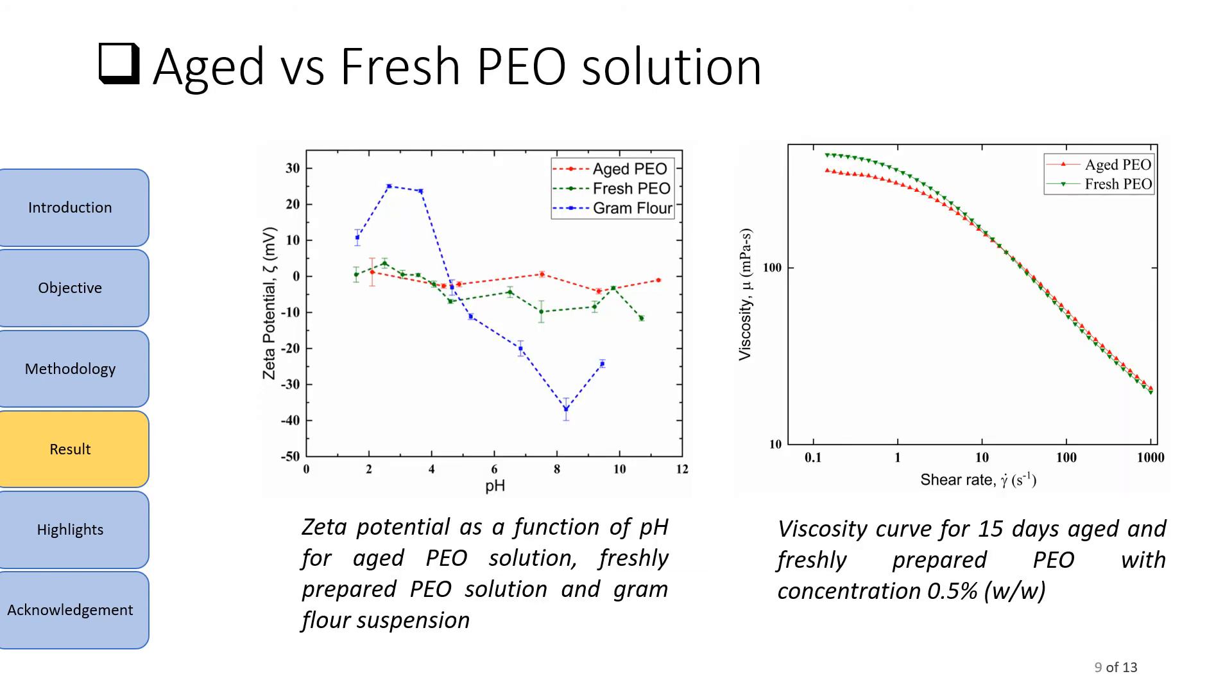It is already mentioned that aged PEO solution gives streamer formation whereas freshly prepared solution does not. So to look more into aging phenomenon, two types of characterization experiments were performed. The first plot here compares the zeta potential of aged and freshly prepared PEO solution as a function of pH. It can be seen that at the experimental pH of 6.5, the surface charge on PEO becomes less negative on aging while particles hold strong negative surface charge. This supports our observation that aging of polymeric solution should favor polymeric bridging.